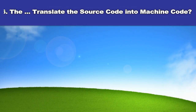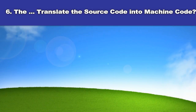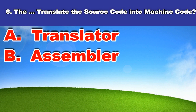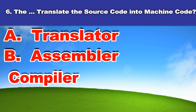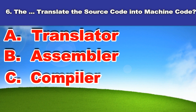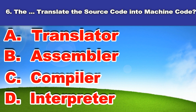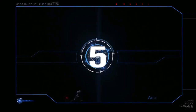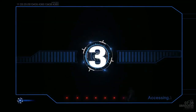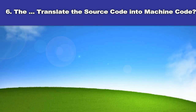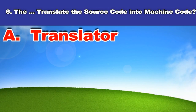Sixth question. Which translates the source code into machine code? A. Translator, B. Assembler, C. Compiler, D. Interpreter. And the answer is: Translator.